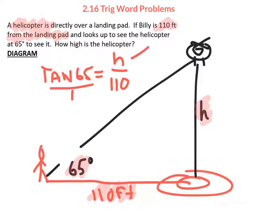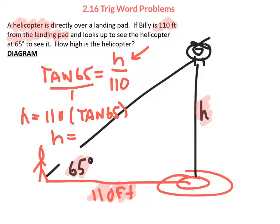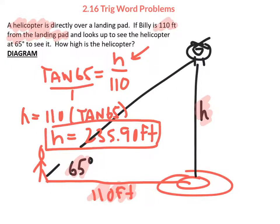When the variable is in the numerator, it simply becomes multiplication: h equals 110 times the tangent of 65. The approximate height is 235.90 feet — that represents the height from the ground to the helicopter. Number-wise it makes sense that it would be a fairly large number if your helicopter is up in the air.